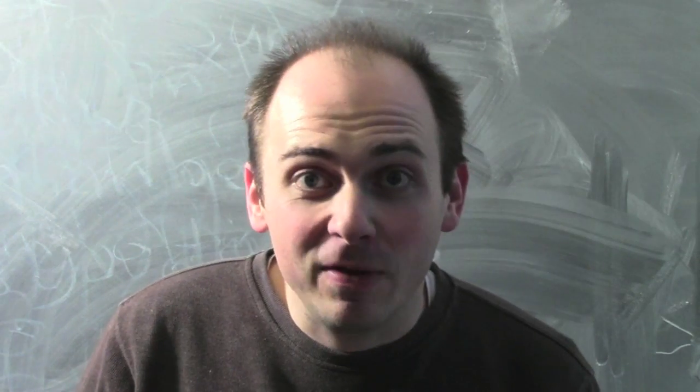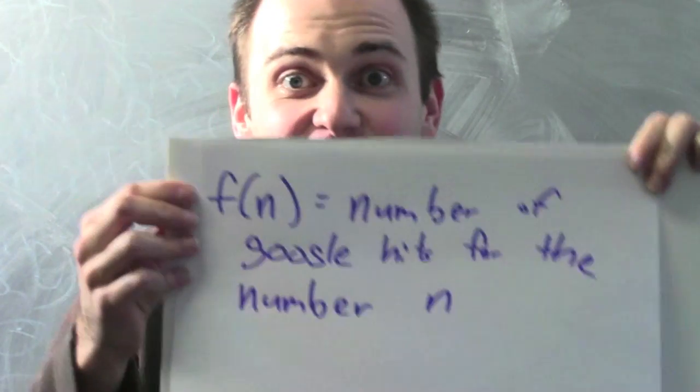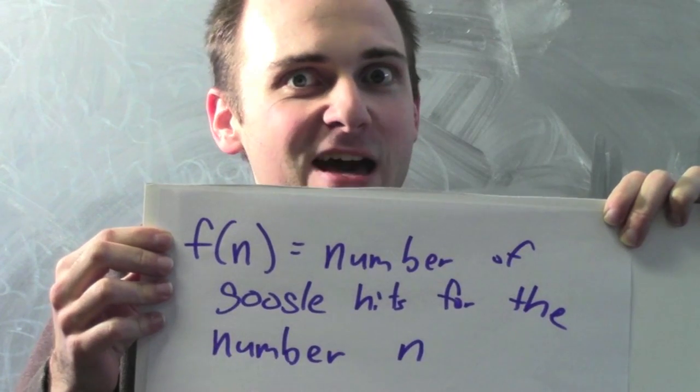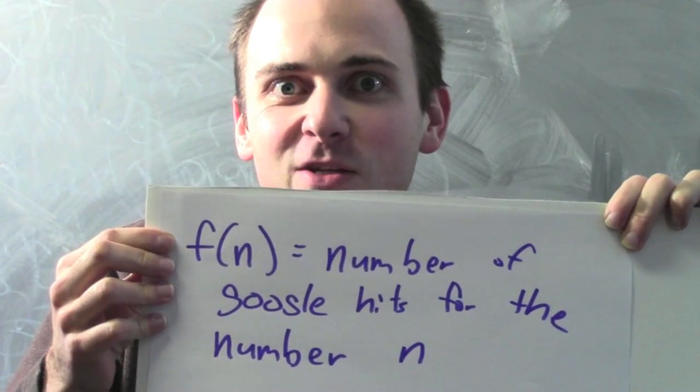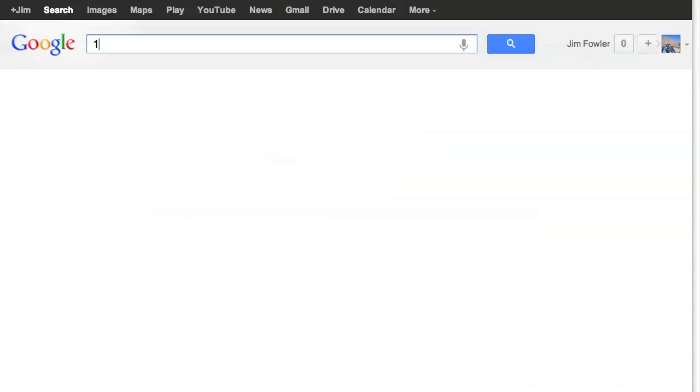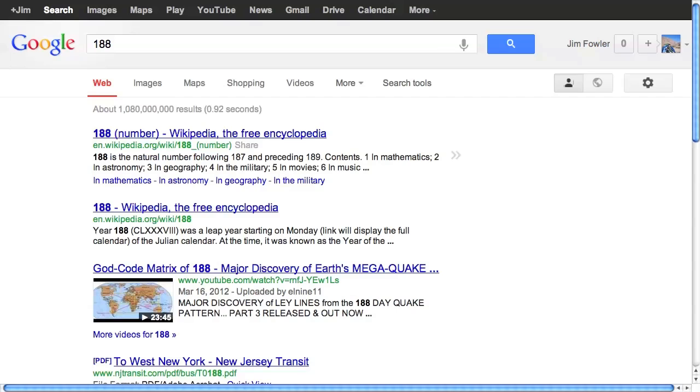And as long as we're searching the internet, here's another example of a real world function. It's a function I'll call f of n, and I'll be defined by the rule: f of n equals the number of Google hits when we search for the number n. Let's try it out. Let's figure out some values of this function, like f of 188. So I plug 188 into Google, and I find that there's about 1.08 billion hits.